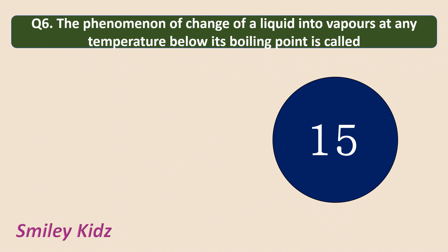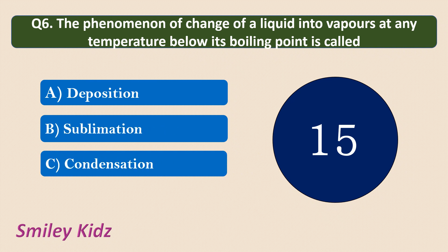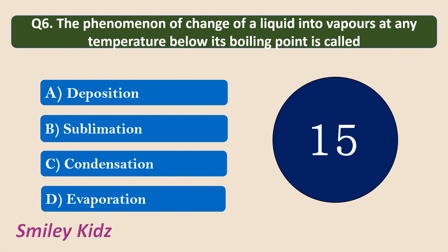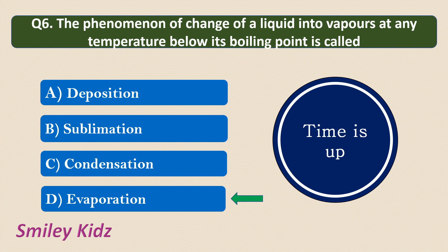Question number 6. The phenomenon of change of a liquid into vapors at any temperature below its boiling point is called? Your options are Deposition, Sublimation, Condensation, or Evaporation. Your time starts now. Your time is up and the correct answer is Evaporation, because the liquid is changing into gaseous state. The phenomenon of change of a liquid into vapors at any temperature below its boiling point is called Evaporation.